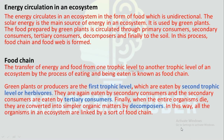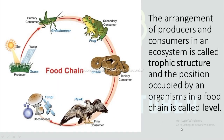Food chain: The transfer of energy and food from one trophic level to another trophic level of an ecosystem by the process of eating and being eaten is known as a food chain. Green plants or producers are the first trophic level, eaten by second trophic level herbivores, which are eaten by secondary consumers, which are eaten by tertiary consumers. When all organisms die, they are converted into simpler organic matter by decomposers. The arrangement of producers and consumers is called trophic structure, and the position occupied by an organism in a food chain is called a trophic level.